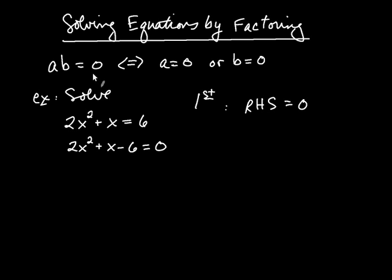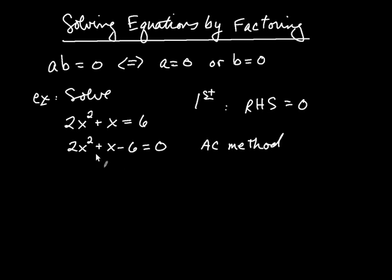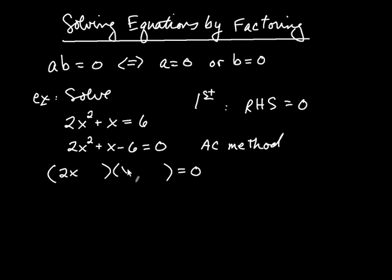Once you have zero on the right-hand side, you have to make sure the left-hand side is a product — that means you have to factor it. We've spent a lot of time on factoring, and we'd factor this one using the AC method. When you factor this, you're going to get, while the right-hand side is still equal to zero, 2x minus 3 times x plus 2.